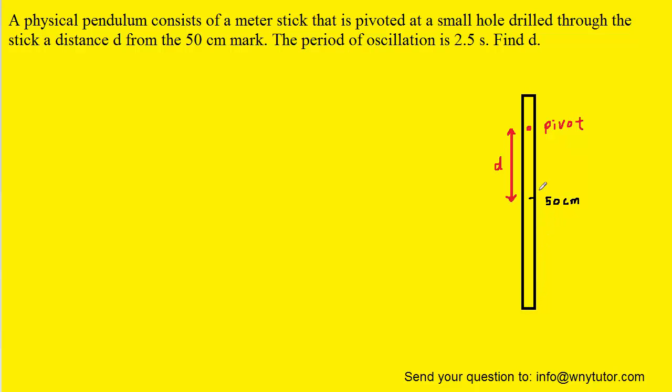We've gone ahead and drawn a meter stick that has a small hole drilled through it located at a distance d from the 50 centimeter mark, and we've labeled that point as the pivot because the meter stick is going to be swinging back and forth about that point.